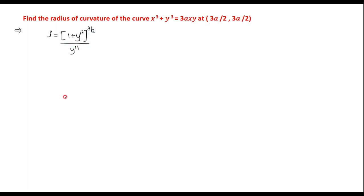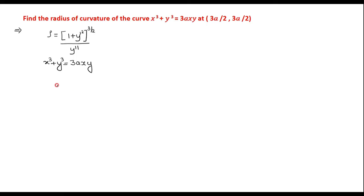Here, y' and y'' are the first order and second order derivatives. So we have to find out the first order and second order derivative of the given curve. The given curve x³ + y³ = 3axy is an implicit function. We will differentiate with respect to x.